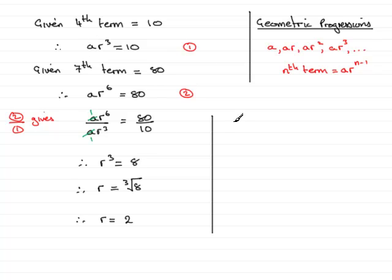I'm going to substitute into equation 1 though, so I'm going to say sub R equals 2 into equation 1. Doing that gives A times 2 cubed. A times 2 cubed equals 10.